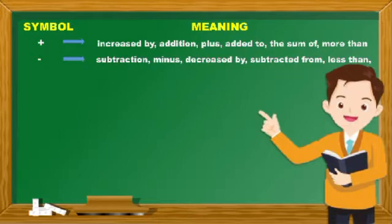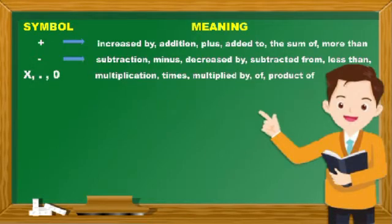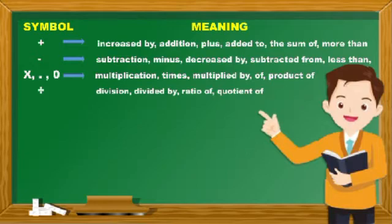Subtracted from, and less than. Third one means multiplication, times, multiplied by, of, or product of. And the fourth symbol